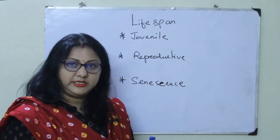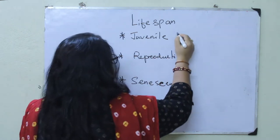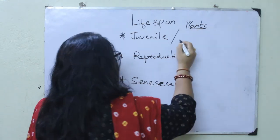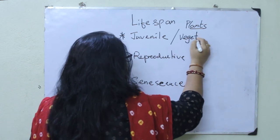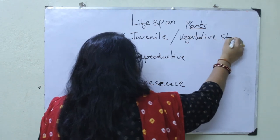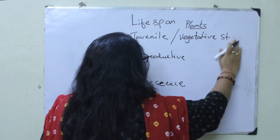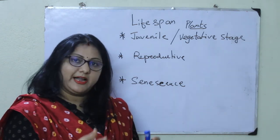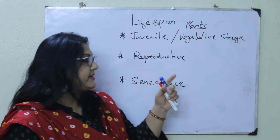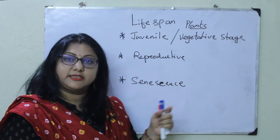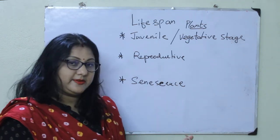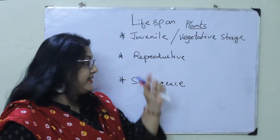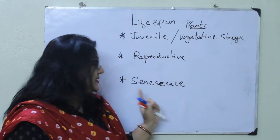The juvenile phase is from birth to the reproductive stage. In plants, the juvenile stage is also referred to as the vegetative stage. In plants, after the plant germinates it enters the vegetative stage, then it attains the reproductively active stage, and then after the reproductive active stage it enters the senescence phase. In animals, it starts with a juvenile phase, then the juvenile enters into the reproductive phase, and then the senescence phase comes.